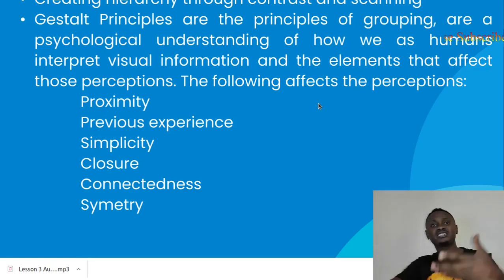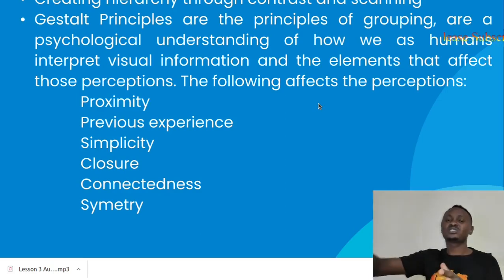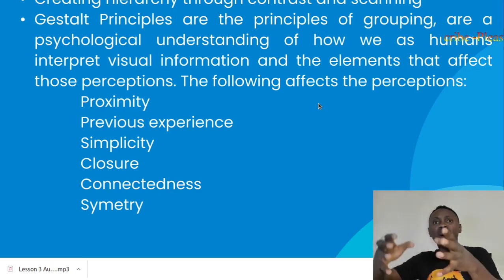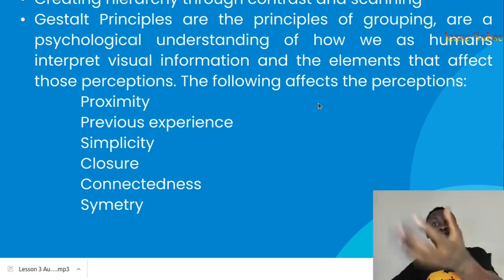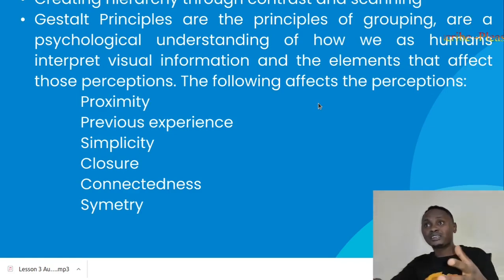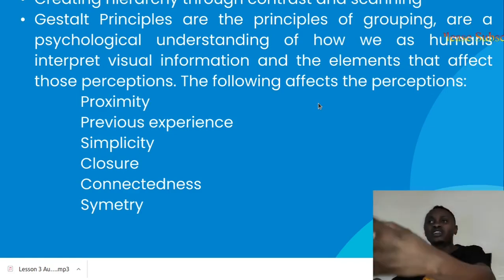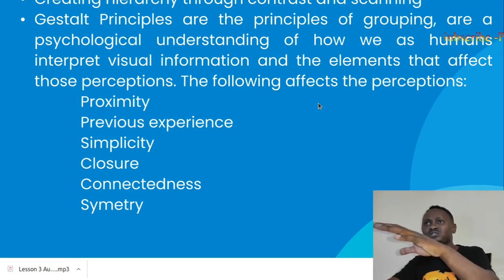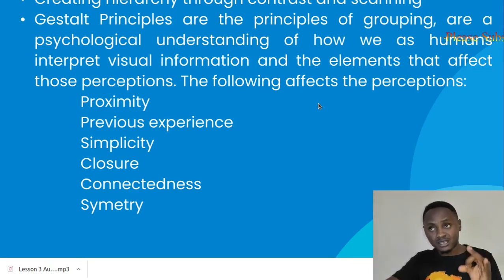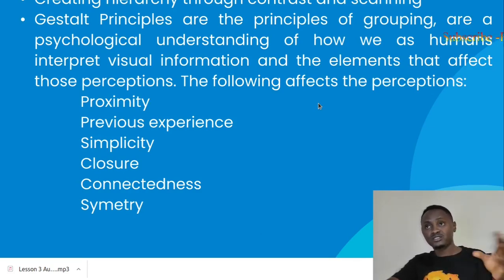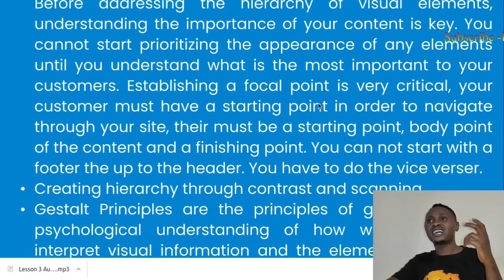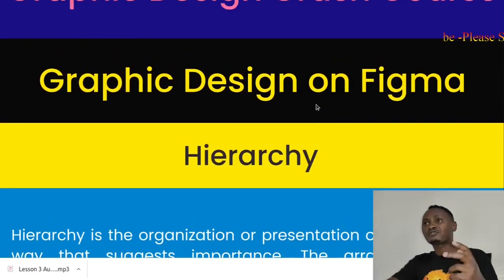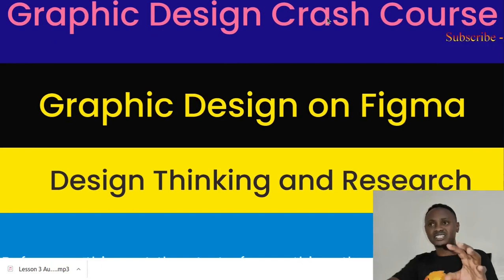Closure: how do you end? How does your customer navigate through to the end of your application or website? How do they move from one point to the last point — how is your finishing, does it disappoint? That is what we call closure. Connectedness: how are your elements connected to each other? You must look at proximity, previous experience of your consumer, simplicity, closure, connectedness, and symmetry. After hierarchy, we're going to talk about design thinking and research.